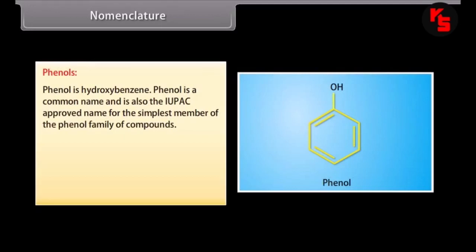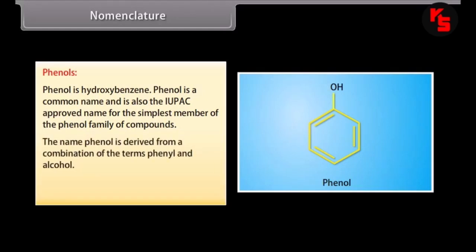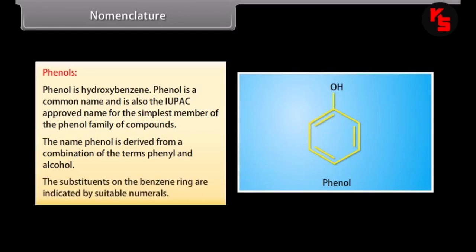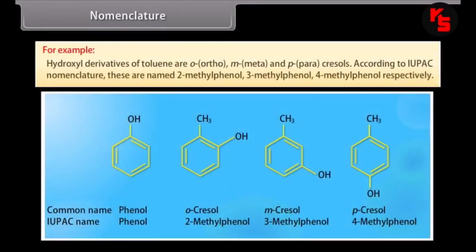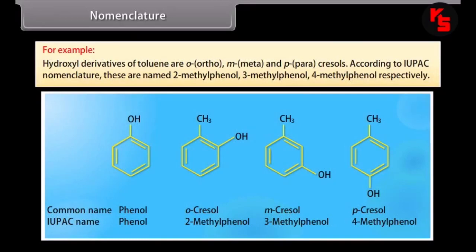Phenol is hydroxybenzene. Phenol is a common name and is also the IUPAC approved name for the simplest member of the phenol family. The name phenol is derived from a combination of the terms phenyl and alcohol. The substituents on the benzene ring are indicated by suitable numbers. For example, hydroxyl derivatives of toluene are ortho-, meta- and para-cresols, named according to IUPAC as 2-methylphenol, 3-methylphenol and 4-methylphenol respectively.